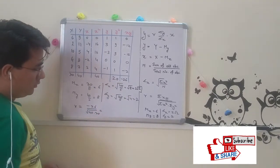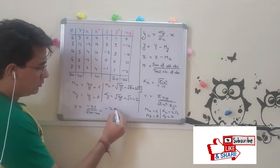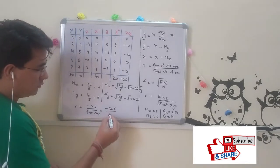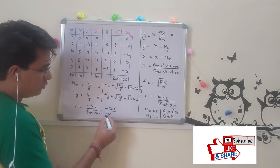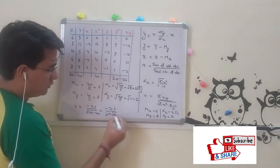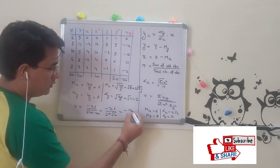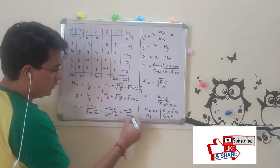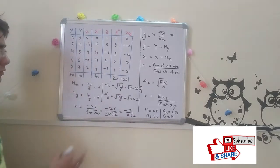This is sigma x square. Add this, you'll get 40. Sigma y squared is 20. What will you be getting? This minus 26 over root of 40 into 20, which is 2 root 2.